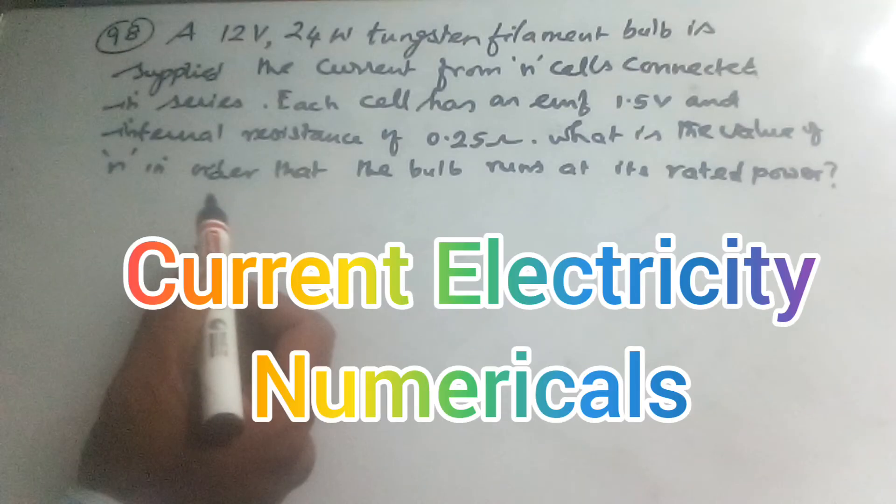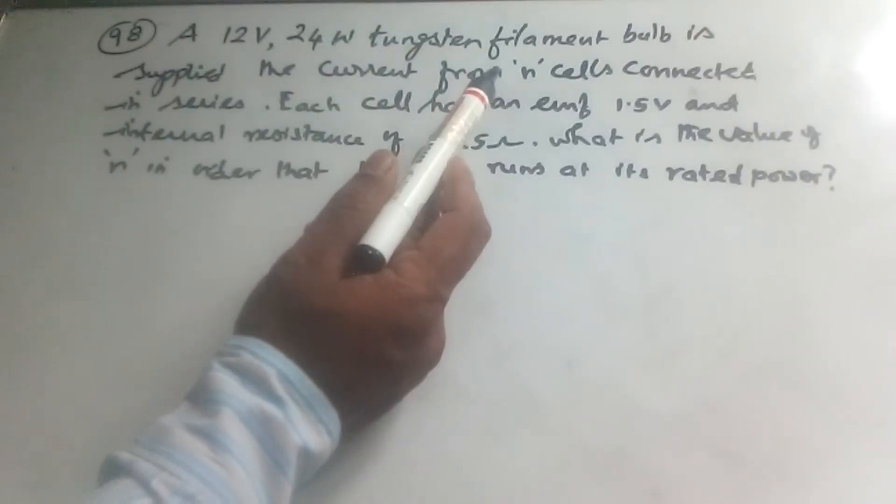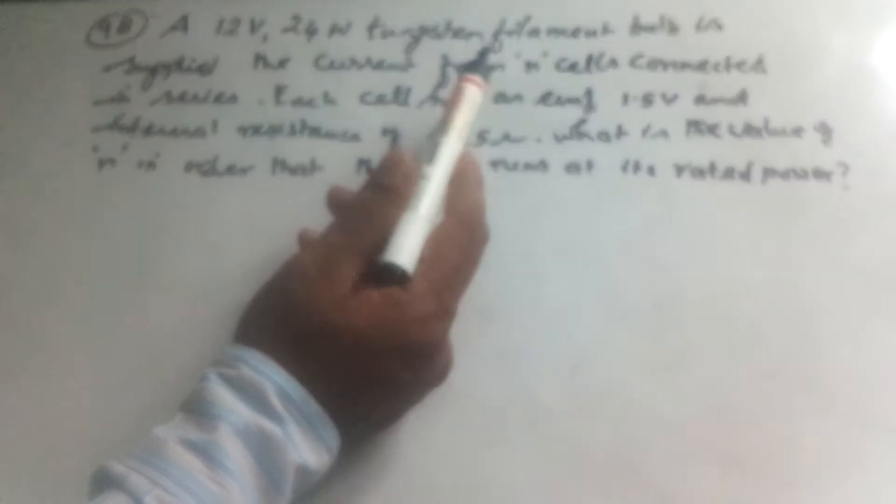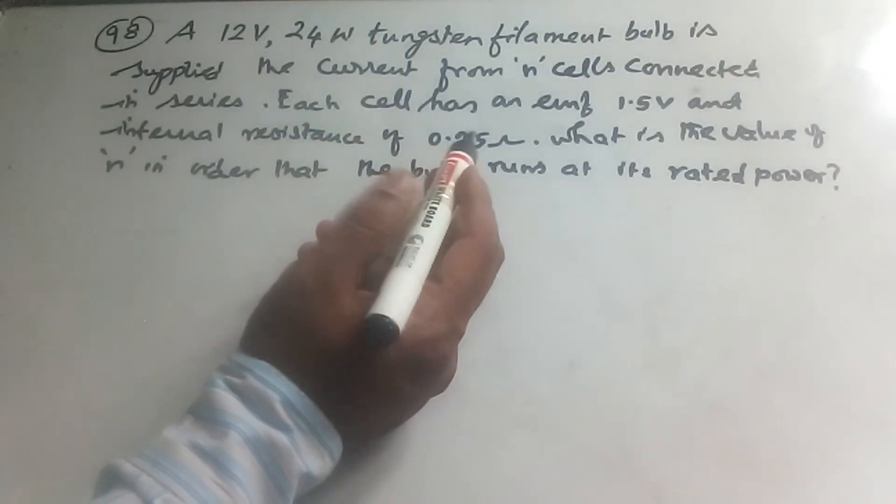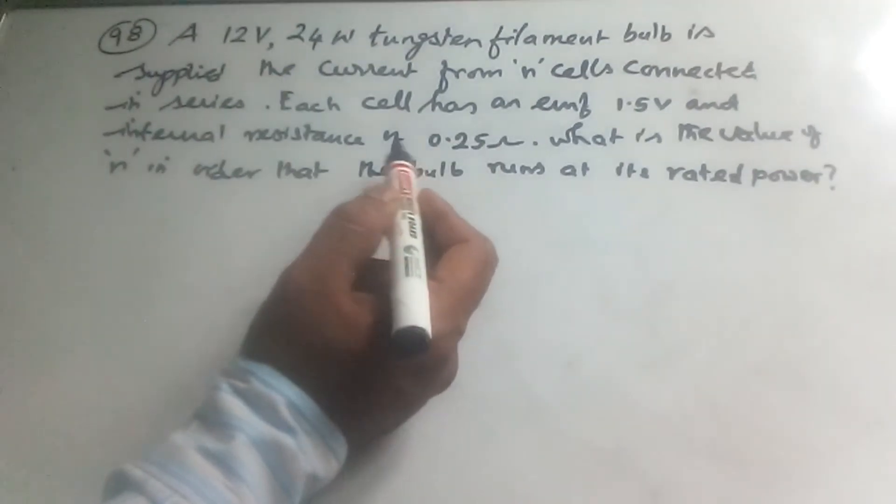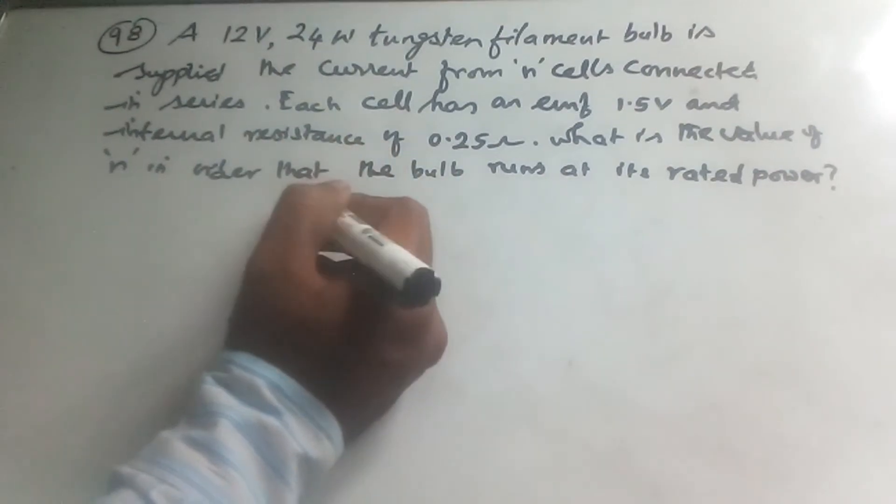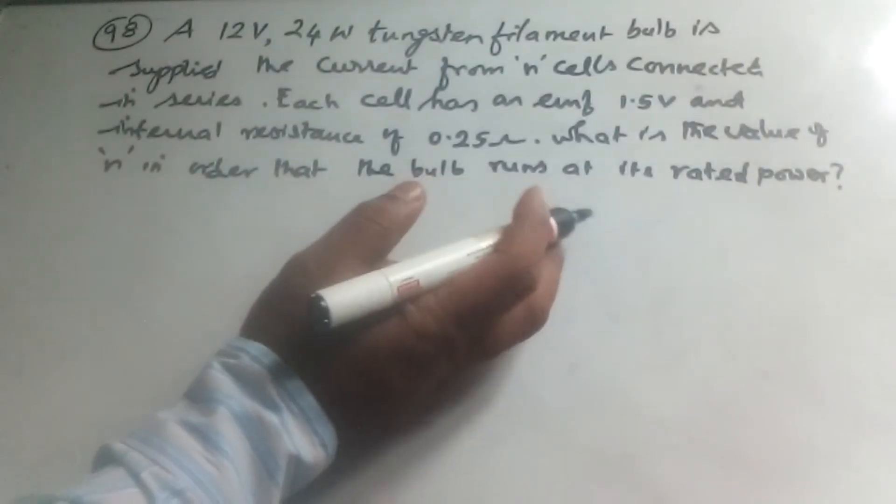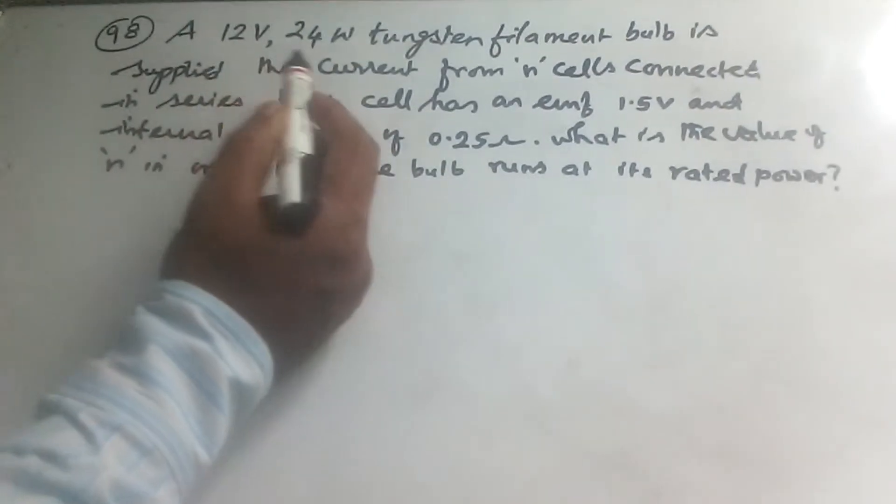A 12 volt, 24 watt tungsten filament bulb is supplied. The current from n cells is collected in series. Each cell has an EMF of 1.5V and internal resistance of 0.25 ohm. What's the value of n in order that the bulb runs at the stated power?